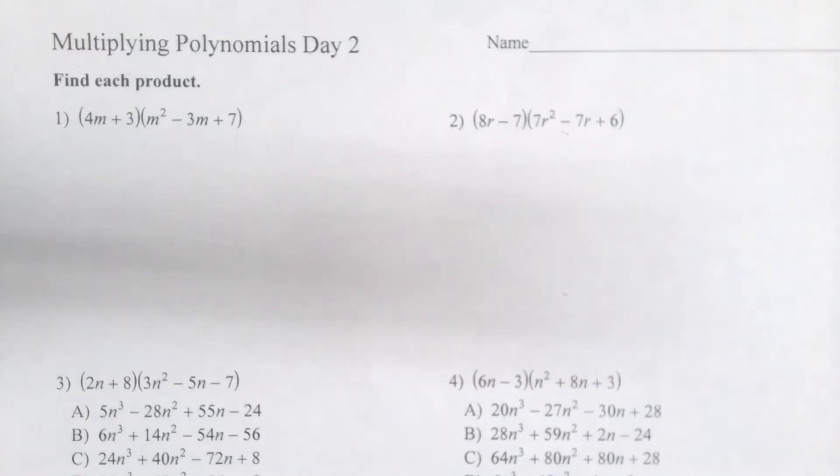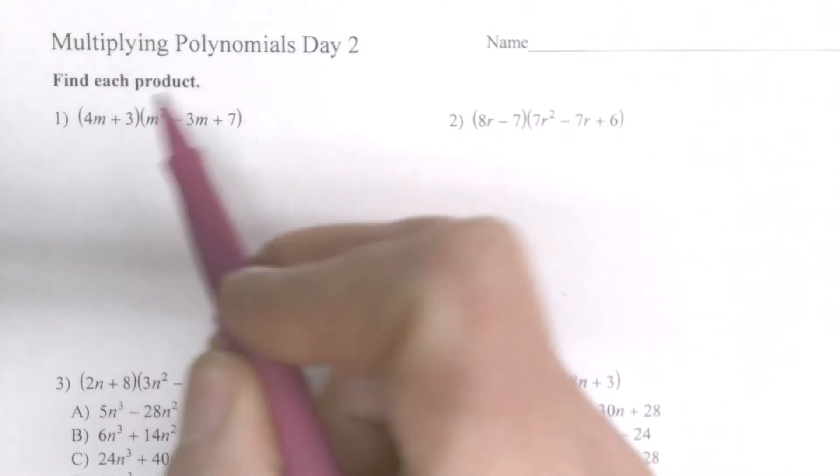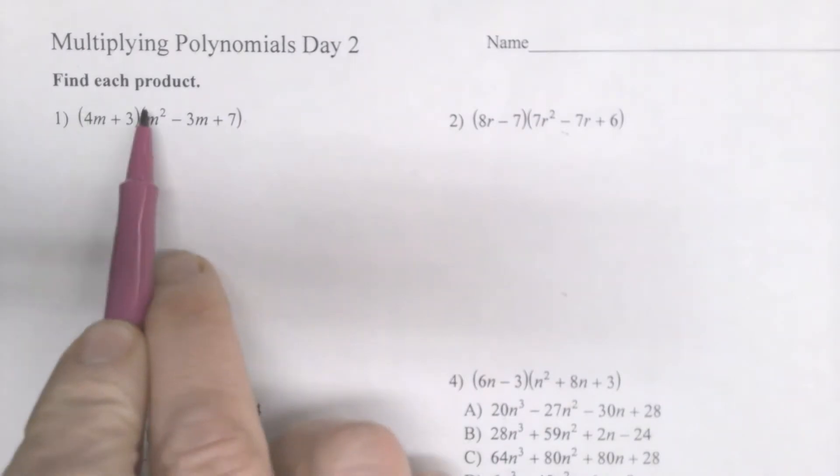This is our second day of multiplying polynomials. If you watched the video yesterday, you saw that you could just use something called the FOIL method, where you did your front, outer, inner, last. That method doesn't work if you have a bigger polynomial. In this case, I have a binomial, two terms, times a trinomial, three terms.